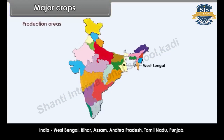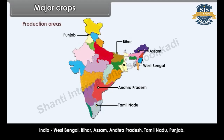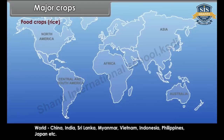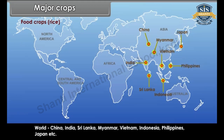Rice production areas in India include West Bengal, Bihar, Assam, Andhra Pradesh, Tamil Nadu and Punjab. World producers include China, India, Sri Lanka, Myanmar, Vietnam, Indonesia, Philippines and Japan.